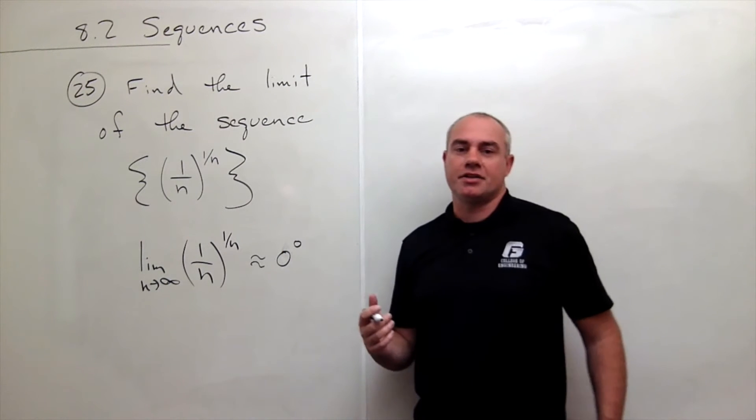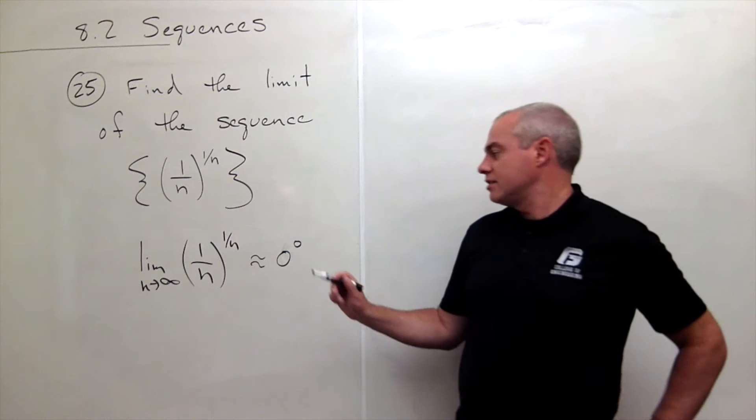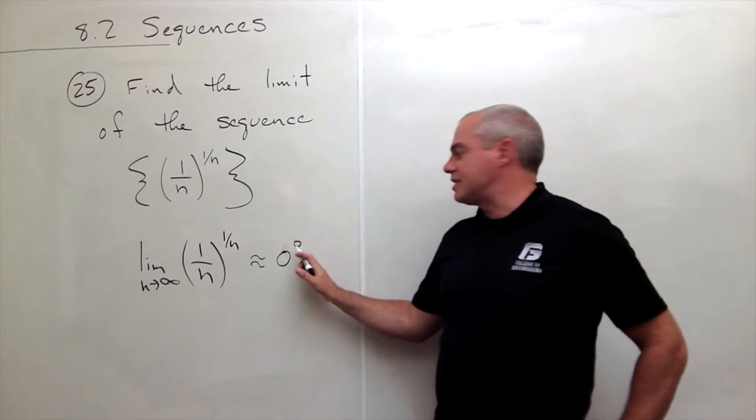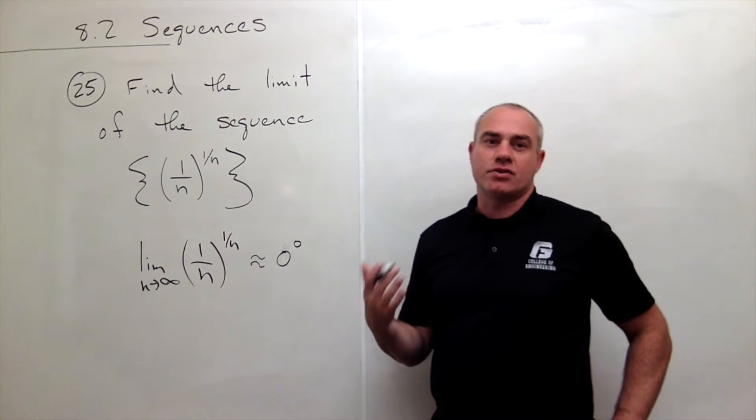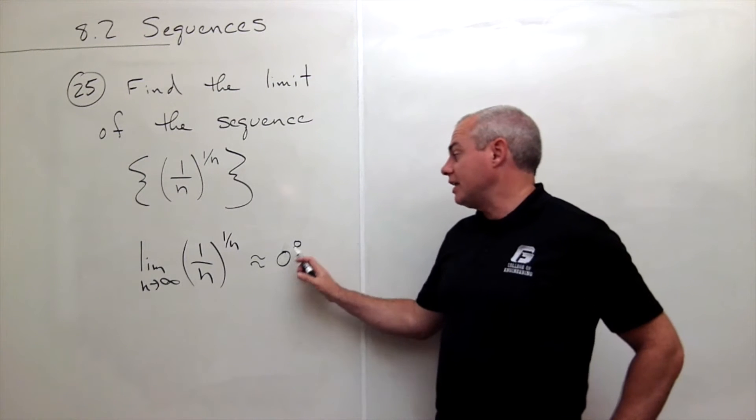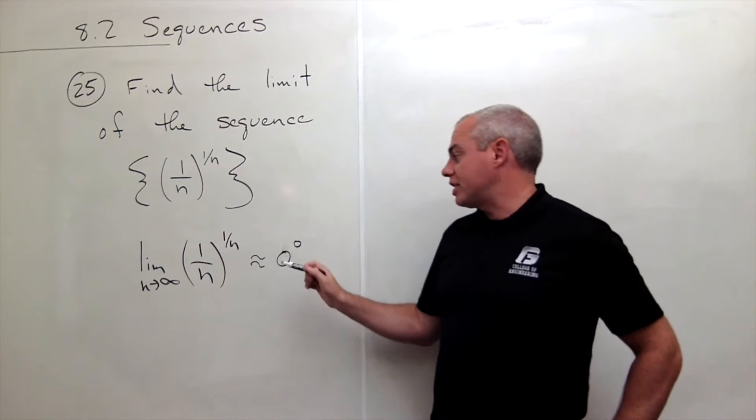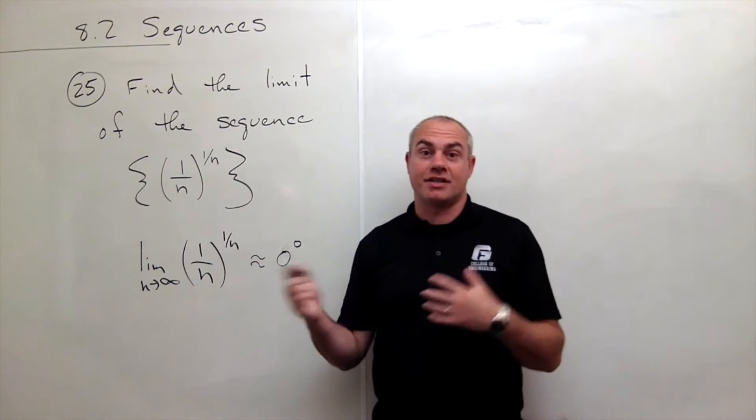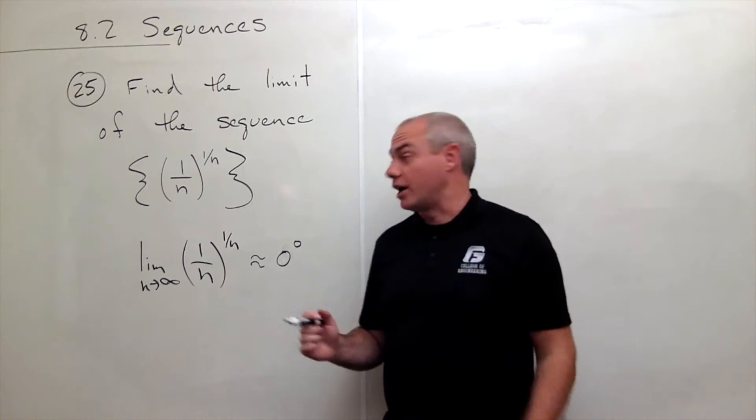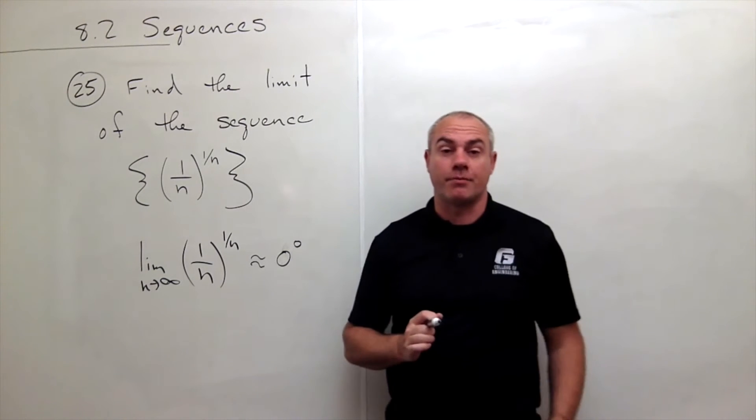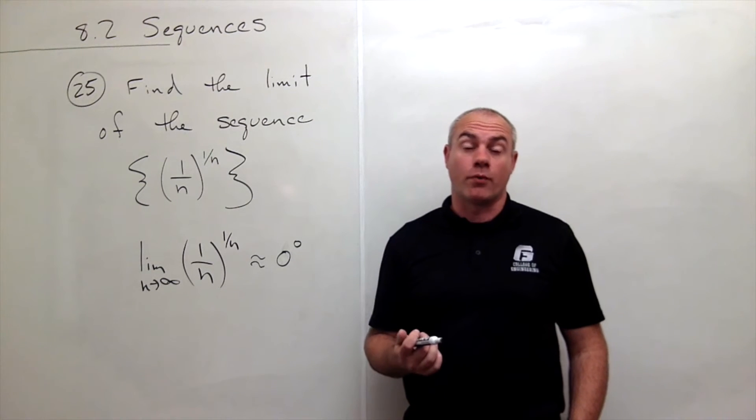And this is an odd indeterminate form, but it makes sense in a way because 0 raised to any power is sort of like 0, but anything raised to the 0 power is kind of like 1. So which is it? Is it 0? Is it 1? Is it somewhere in between? Is it something totally different? We're not sure. That's why this is an indeterminate form and we need to do some more work.